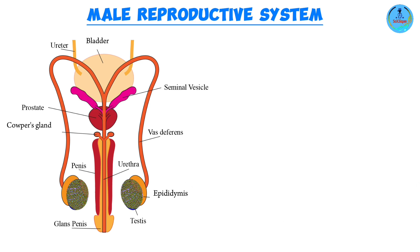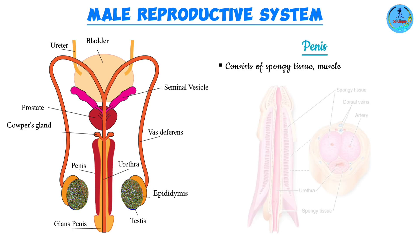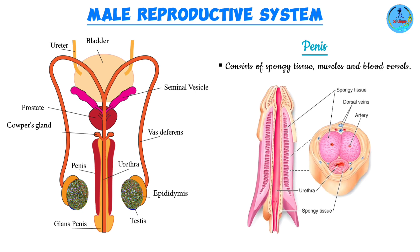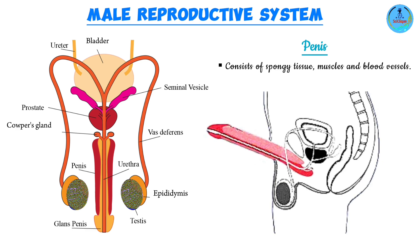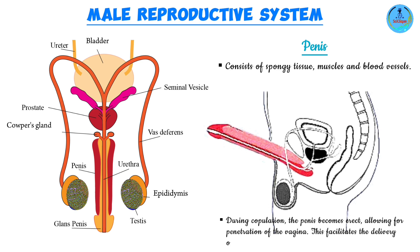The penis consists of spongy tissue, muscle, and blood vessels. It is referred to as spongy tissue because it has spaces — during sexual arousal, these spaces fill up with blood, ensuring that the penis becomes firm, rigid, and erect so that it can penetrate into the female's body through the vagina. This allows for the deposition of the sperm cells into the female reproductive system, a process known as ejaculation.